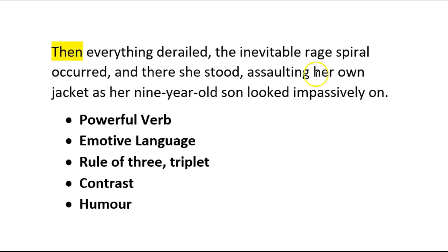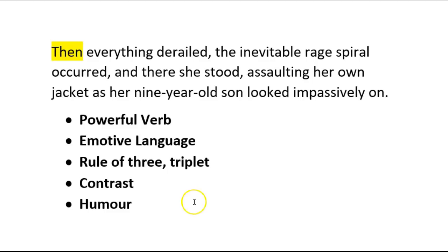So we've got the emotive language of 'impassively', 'rage', 'derailed' and 'assaulting'. You've got the powerful verb of assaulting. You've got the contrast — while she's getting all worked up and assaulting her jacket, her son is looking on impassively, without any emotion at all. So a deliberate use of contrast. And that contrast also brings us directly to humour — it's quite funny that the adult is losing control and the nine-year-old son is not losing control at all. And then the rule of three is a quite subtle version here, which you need to practise. It's writing your sentences in three parts: 'the inevitable rage spiral occurred', 'there she stood', 'assaulting her own jacket as her nine-year-old son looked impassively on.' Three parts to what we're seeing in the sentence — and that makes it a triplet.